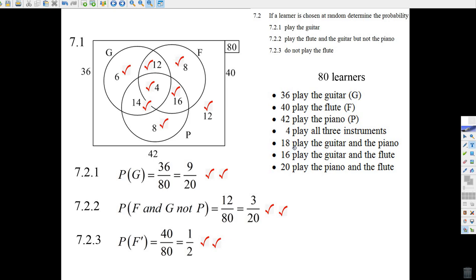But now we try some other things. We've got 18 people play the guitar and the piano. Well, here's the guitar and piano. Four people play all three, but 18 people altogether live in this slice here where guitar and piano cross over. So you go 18 minus four. There must be a 14 right there, people that play the guitar and piano but not the flute.